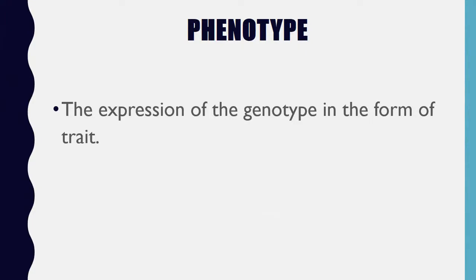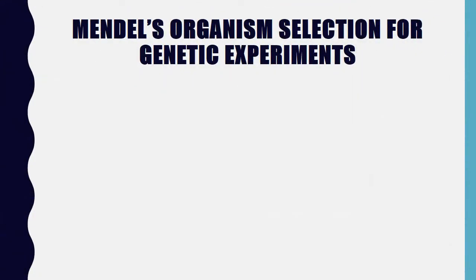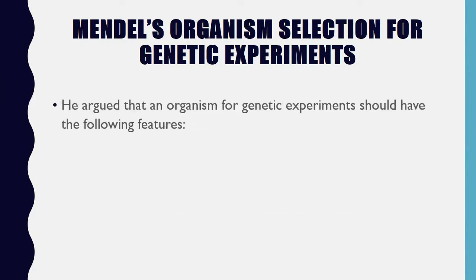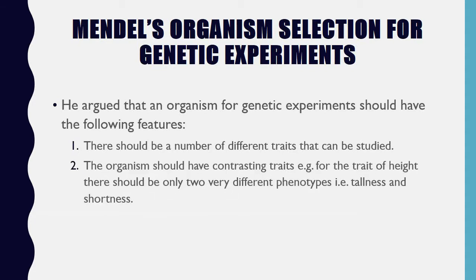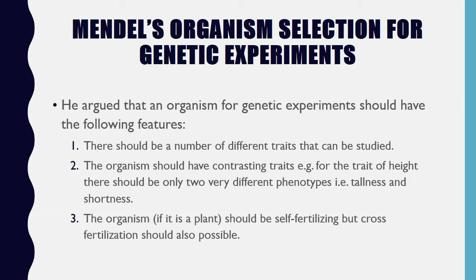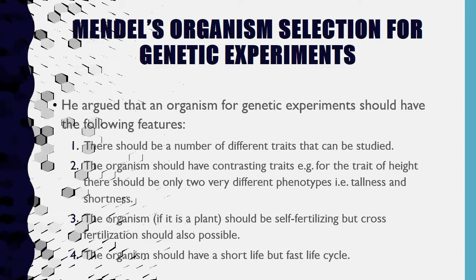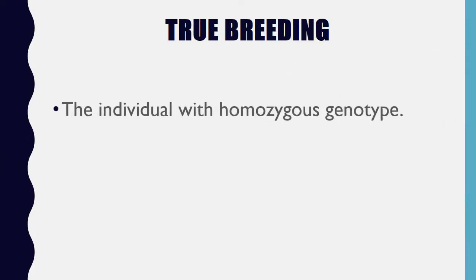Phenotype: the expression of the genotype in the form of a trait. Mendel's organism selection for genetic experiments: he argued that an organism for genetic experiments should have a number of different traits that can be studied; contrasting traits (e.g., for height, only tallness and shortness); the organism, if a plant, should be self-fertilizing but cross-fertilization should also be possible; and the organism should have a short but fast life cycle. True breeding: the individual with a homozygous genotype.